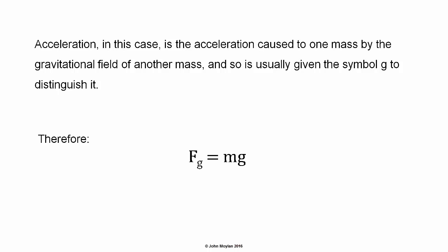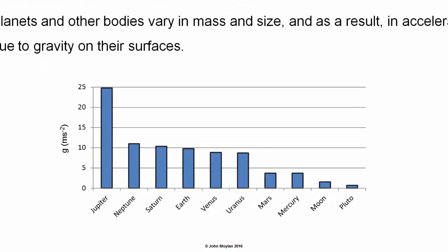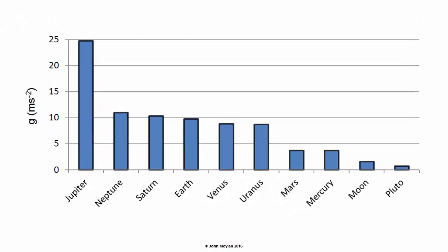G is acceleration due to gravity in meters per second squared. Gravity on other planets: planets and other bodies vary in both mass and size, and as a result also vary in the value of acceleration due to gravity on their surfaces. The highest acceleration due to gravity is on the surface of Jupiter, just a little bit less than 25 meters per second squared.